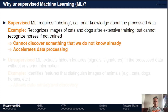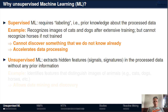Supervised learning accelerates data processing, replacing human effort to go through all the data — humans can do an equally good job but it requires much more time. In contrast, unsupervised machine learning extracts hidden features, signals, or signatures in the process data without any prior information. We don't need subject matter expertise or prior knowledge — we just feed the data into an algorithm and let it analyze.